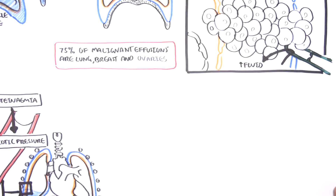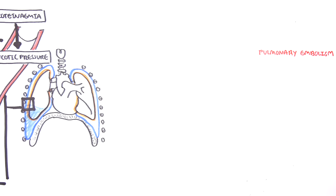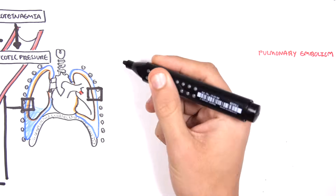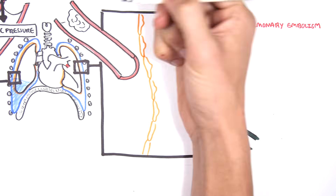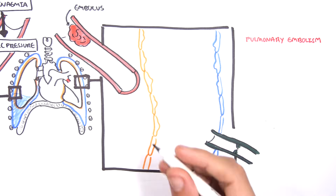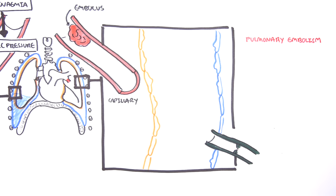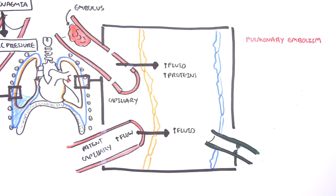Finally, pulmonary embolism is a cause of exudative pleural effusions, and probably an unrecognized one. Pulmonary embolism, or PE, occurs when there is a thrombus which occludes a pulmonary artery or pulmonary capillary, as shown here. When this happens, the pulmonary vessels will compensate in a few ways. One way is shunting of blood flow to capillaries which work, which means more blood flow, which means more fluid can enter the pleural space. There will be an increase in vascular permeability, and fluid will start to shift into the pleural space.